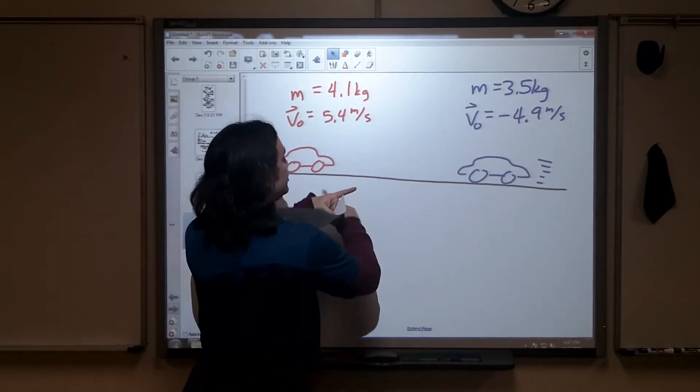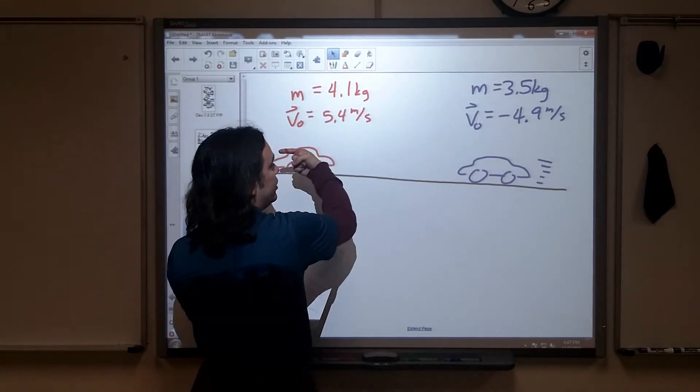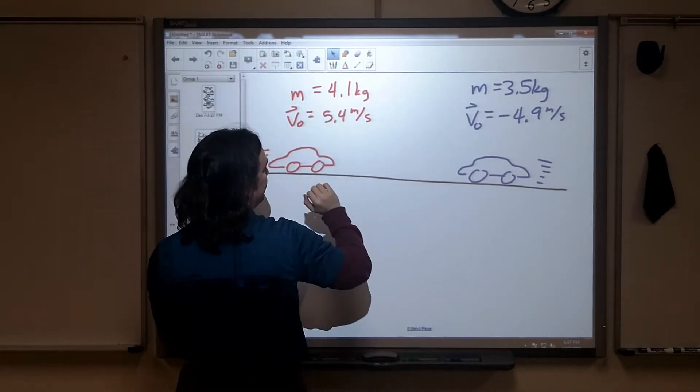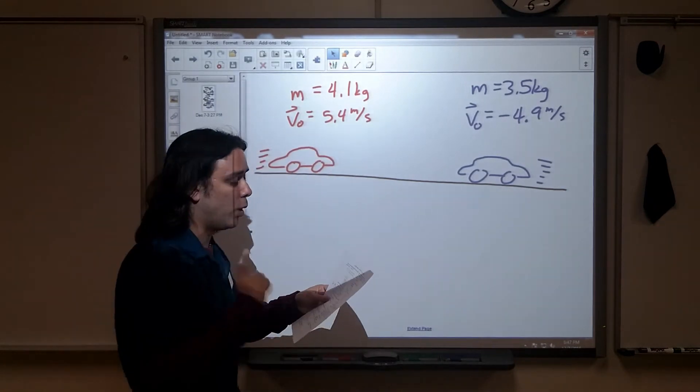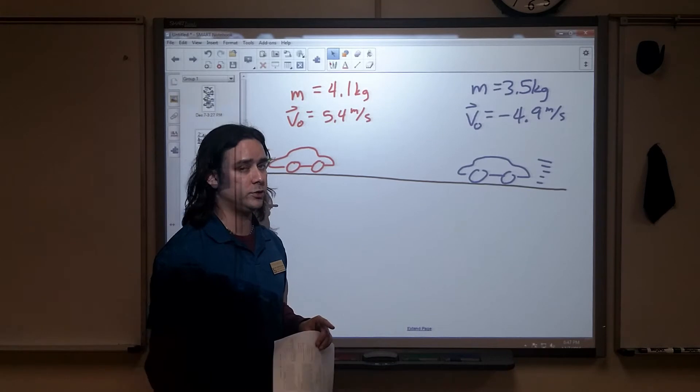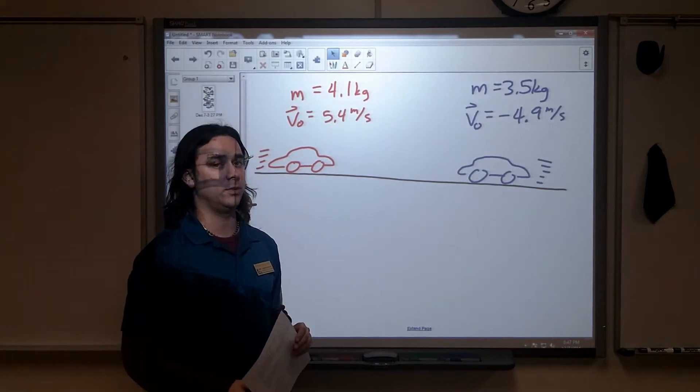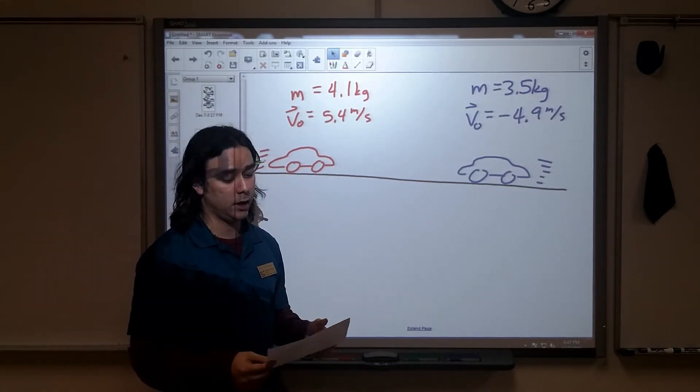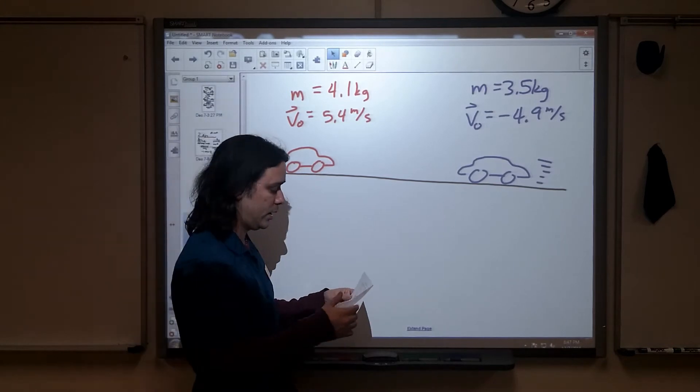Now, we could have reversed these two if we wanted because we could say to the left is positive. This could be negative 5.4 and this could be positive 4.9. But what we do need to know is because they're headed towards one another, one of those needs to be negative and one of them needs to be positive. Otherwise, they're not going towards each other.